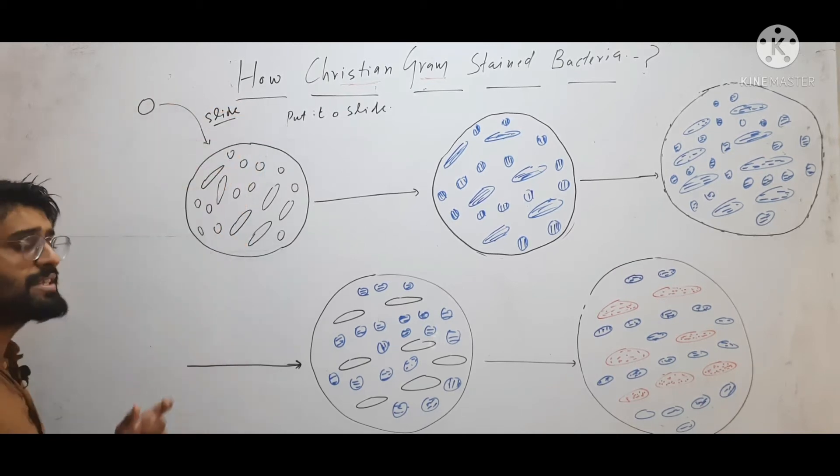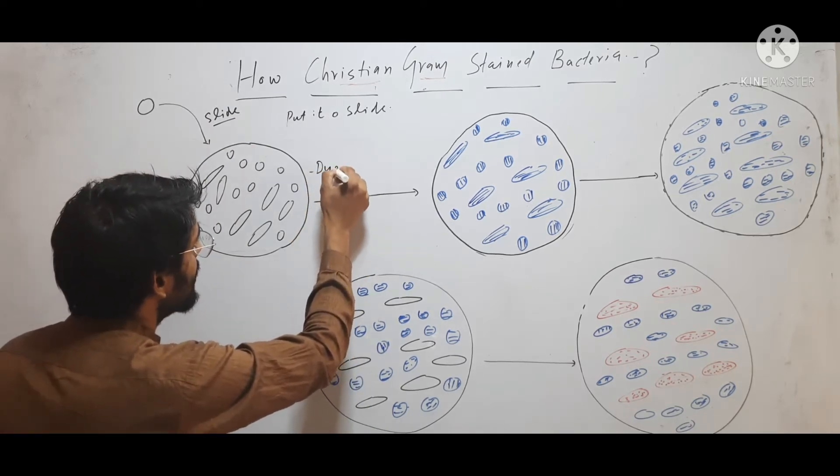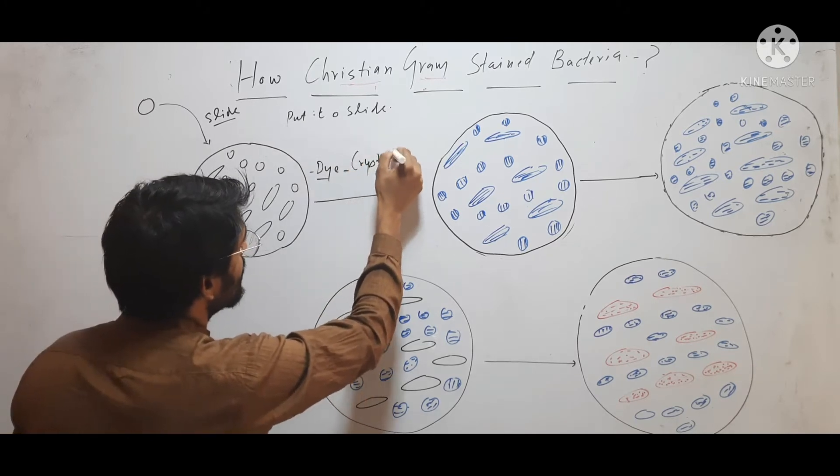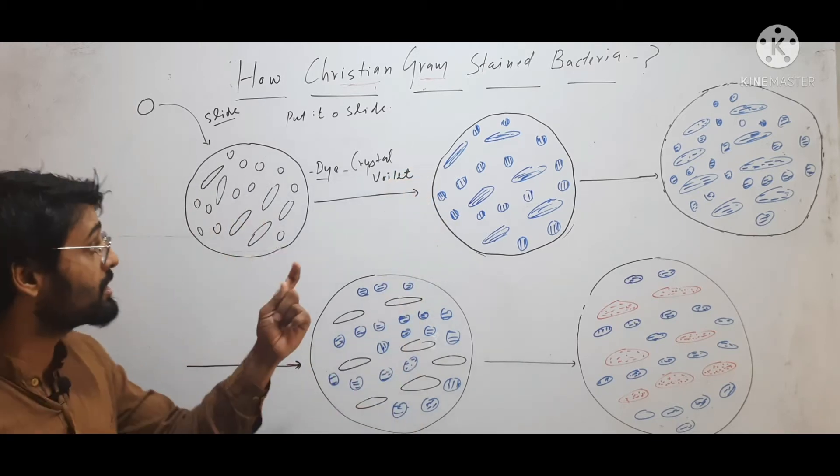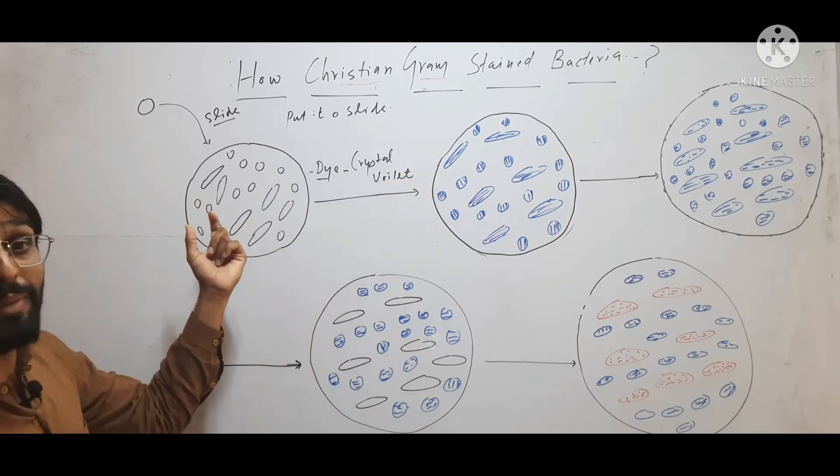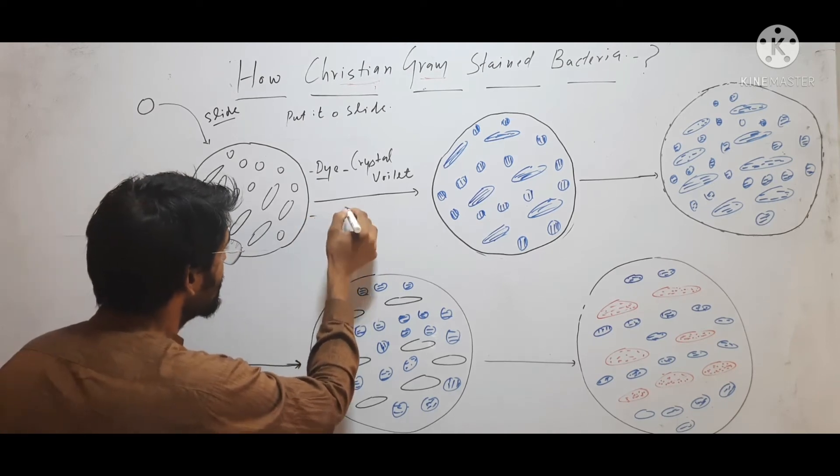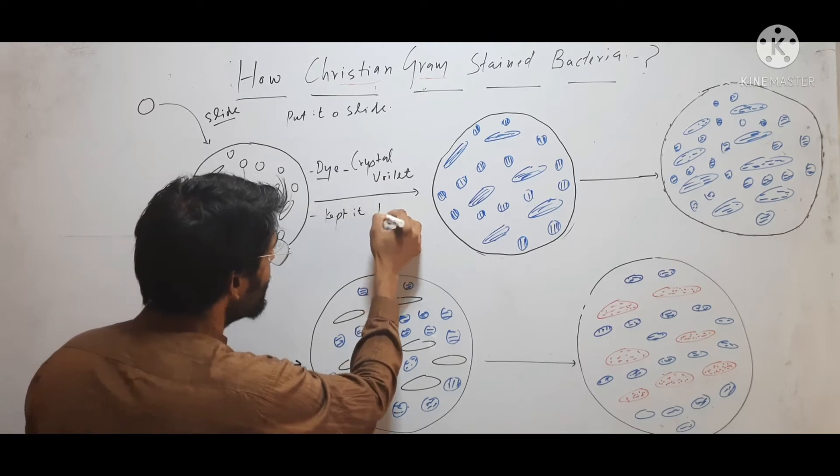Then, on this slide, he applied a dye and the name of dye was crystal violet. He applied crystal violet dye on this bacterial culture and kept it for one minute.